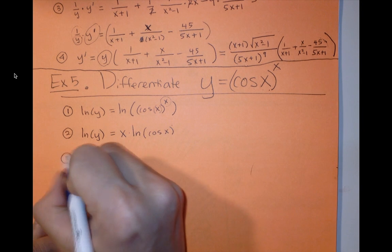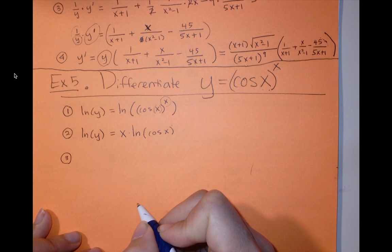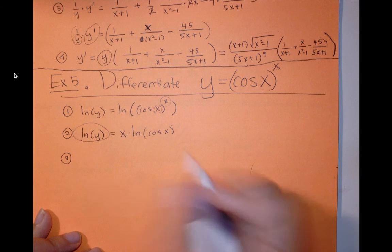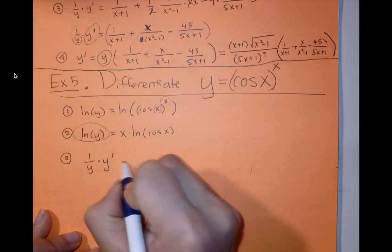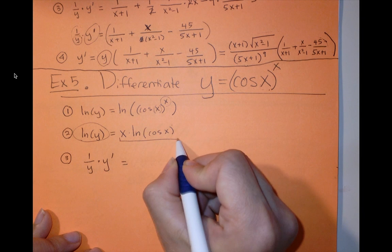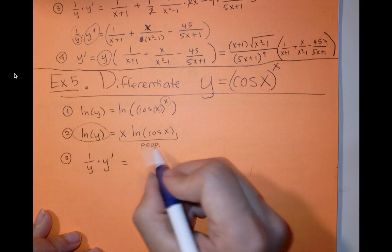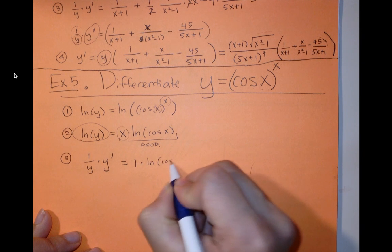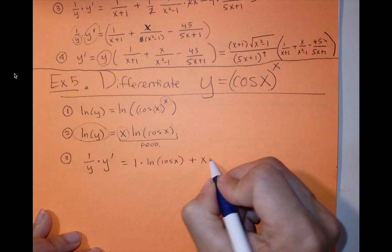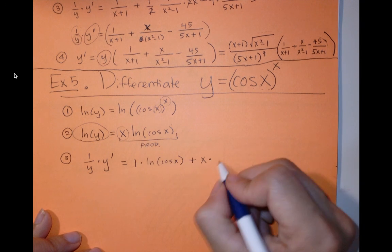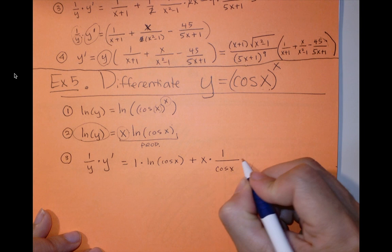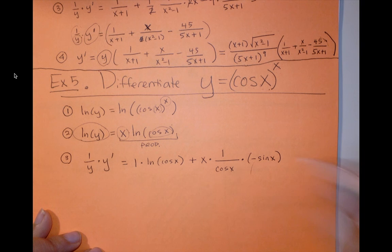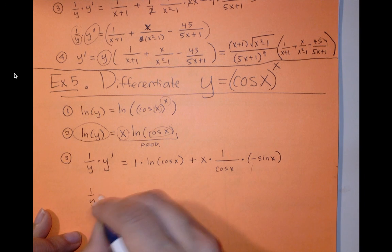And the third step is we apply implicit differentiation. So I'm going to differentiate both sides. The derivative of this with respect to x is 1 over y times y prime once again. To differentiate this, I need to use the product rule. So the derivative of x is 1 times plus x. The derivative of natural log of cosine x is 1 over cosine x times the derivative of my inside function, which is negative sine x. So I'm using the chain rule there. Now I'm going to clean this up a little bit.